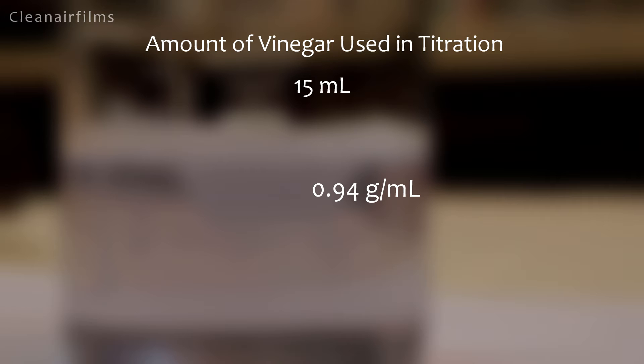Now I will take the amount of vinegar used which was 15 milliliters and multiply it by its density to get the number of grams used, 14 grams.